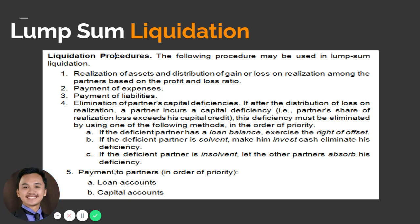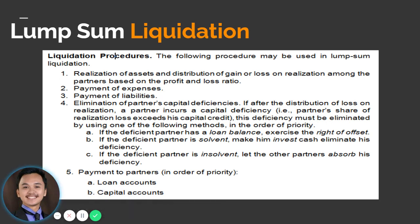The fifth step is payment to partners in order of priority: first, payment to loan accounts — these are internal liabilities, which is the liability of the partnership towards the partners — and lastly, payment to capital accounts. To appreciate these concepts, let's use an example.